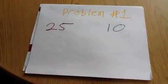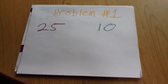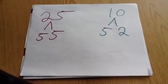Our first example, find the GCF between 25 and 10. You can break down 25 to 5 times 5 and 10 to 5 times 2.